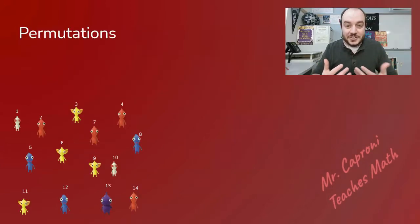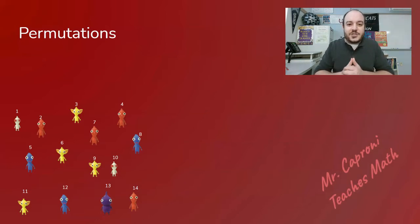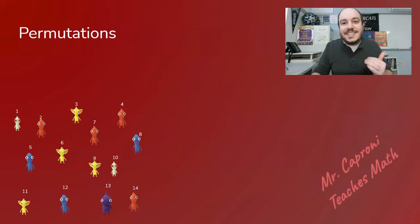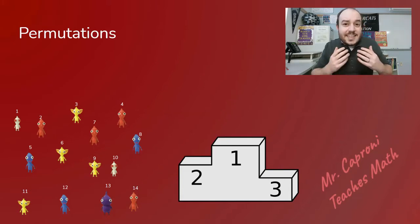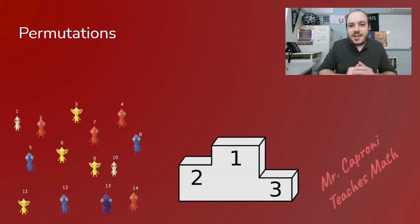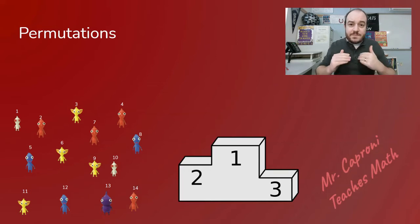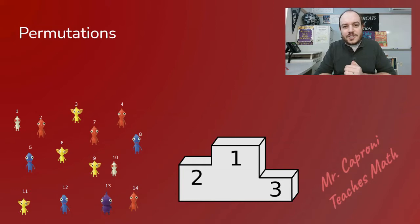I went ahead and grabbed a group of my Larry's here to help us figure out what a permutation is. In this situation I'm going to have my 14 Larry's run in a race and I want to know how many different ways can we have those 14 Larry's finish in the top three positions. In this case the order matters because I'm giving $100 to first place, $50 to second place, and $25 to third place. Because the order matters, that's what makes this a permutation.